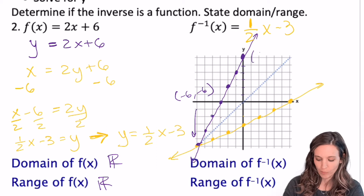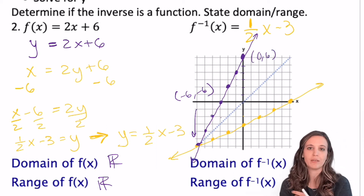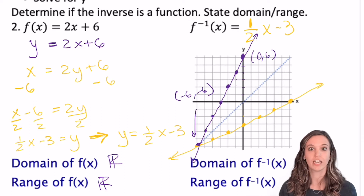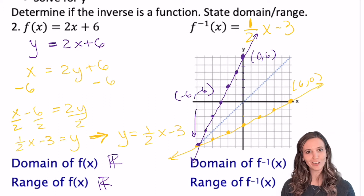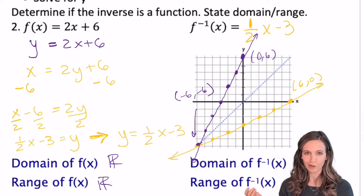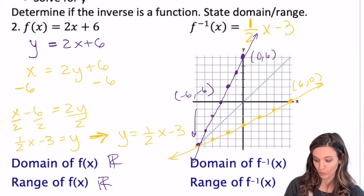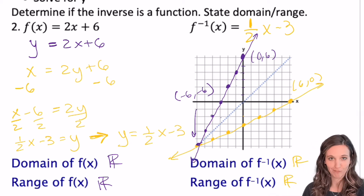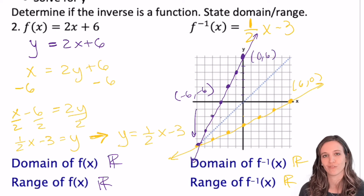On my original I have the point zero, six. Well, x and y switched, so that means I should have the point six, zero on my inverse — and I totally do. So the domain and range, I just swap them. My original function's domain would be my inverse's range, and the range of my original would be the domain of my inverse. All real numbers, because we got a line for that inverse as well.